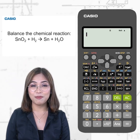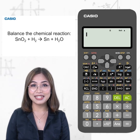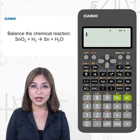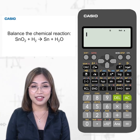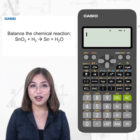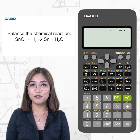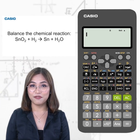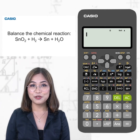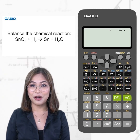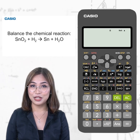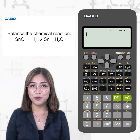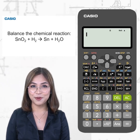Another common method of balancing chemical reaction equations is the algebraic approach. In this approach, coefficients are treated as unknown variables or undetermined coefficients whose values are found by solving a set of simultaneous equations. This is what we're going to do in this problem.